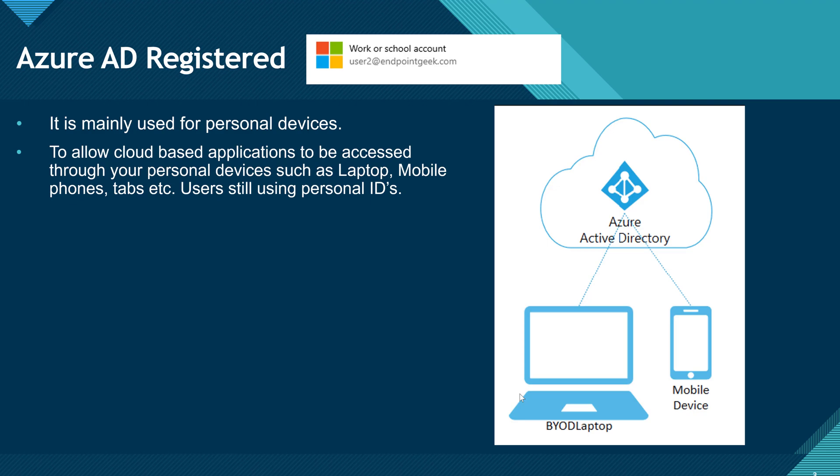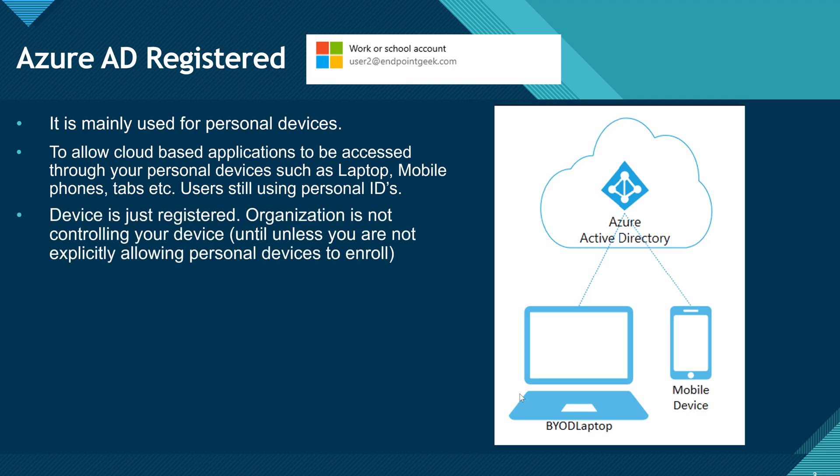Azure AD Registered gives access to cloud-based applications like Office 365 and Teams. You use your own personal credentials — your Hotmail ID or whatever account you use on your device — to log on and access corporate resources. The device is just registered, meaning its information is saved in Azure AD. This does not mean your organization is managing your device.